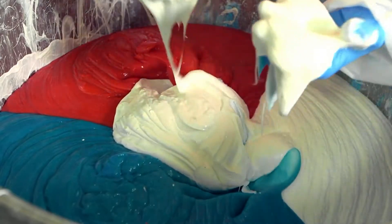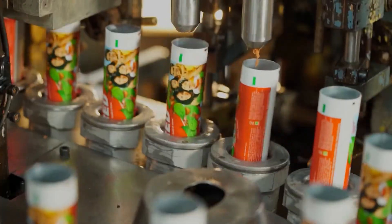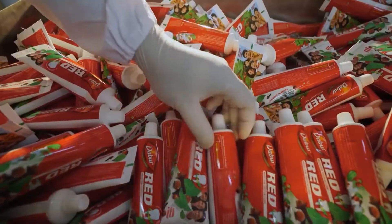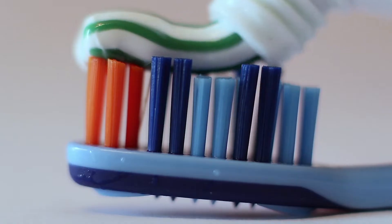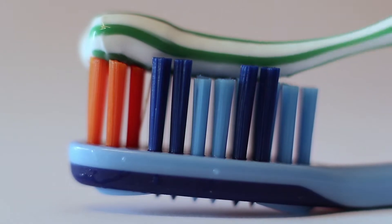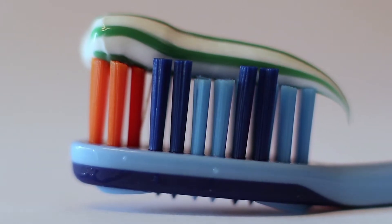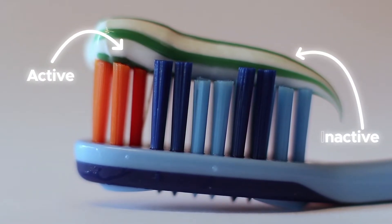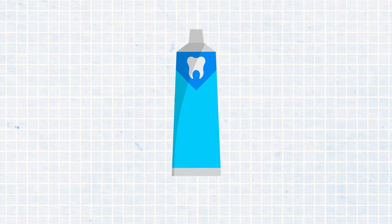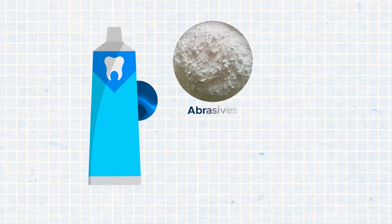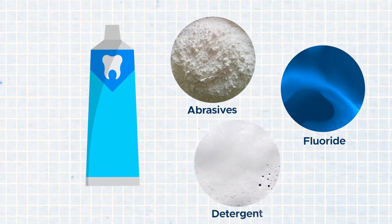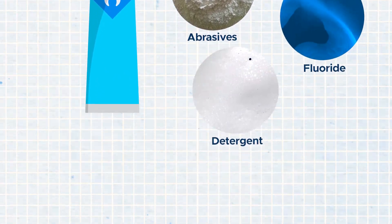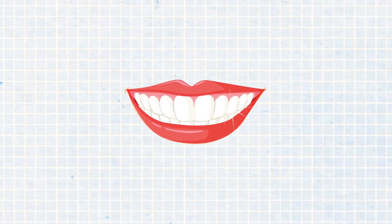The first step to produce toothpaste starts with creating a winning formula. Toothpaste formulations consist of a combination of active and inactive ingredients. Active ingredients such as abrasives, fluoride, and detergent are the ones responsible for providing the main oral care benefits.